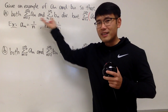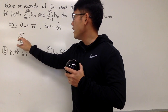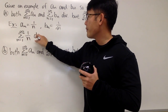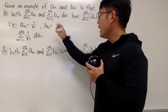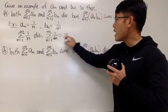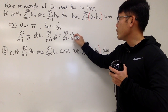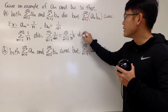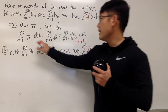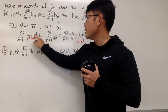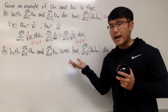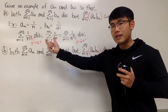Let me show you why this will satisfy these two conditions. The sum from N=1 to infinity of aₙ, which is 1 over N — this diverges because it is the harmonic series. And then the sum of bₙ, which is the sum from N=1 to infinity of 1 over square root of N, is the sum of 1 over N to the 1/2 power. This also diverges because p = 1/2, which is less than or equal to 1, by the p-series test. Both of these series diverge.